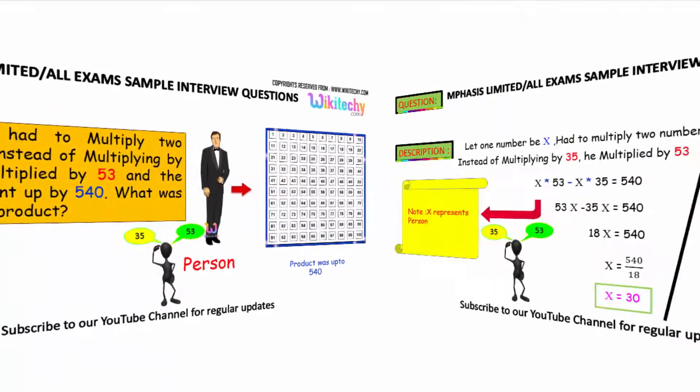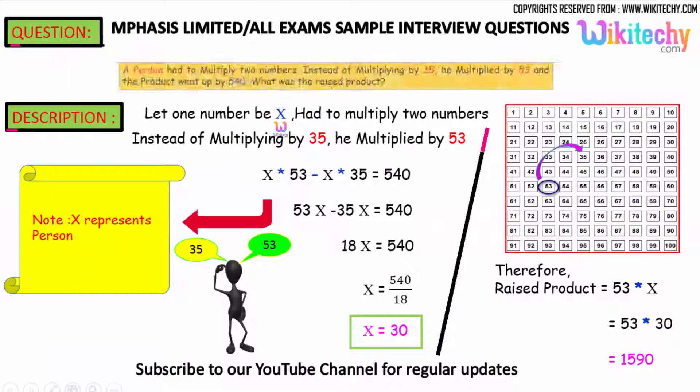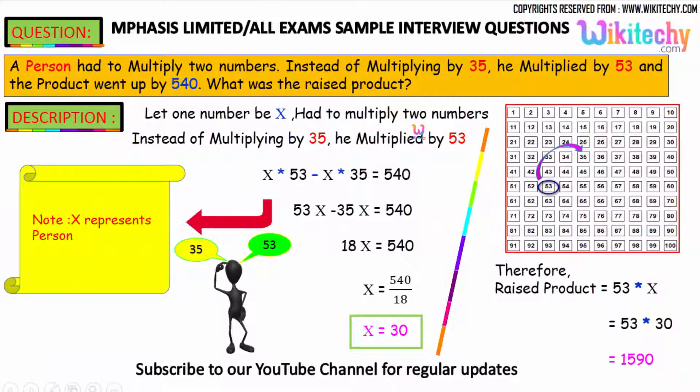So I got a value x and I need to multiply by two numbers. Instead of multiplying by 35, I multiplied by 53. So the value increased by 540. So 53 into the number x minus 35 into x is equal to 540.